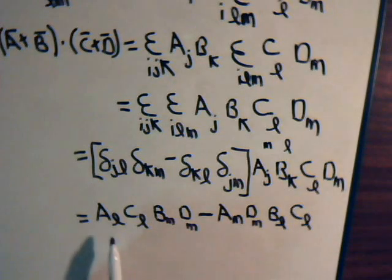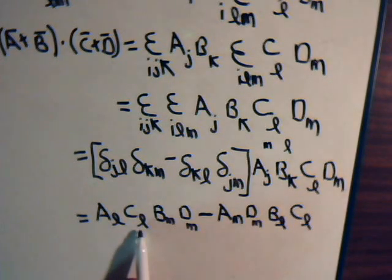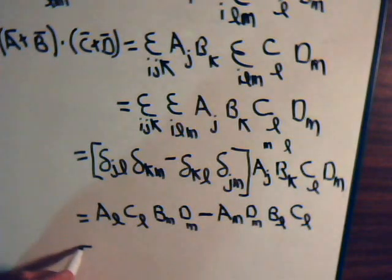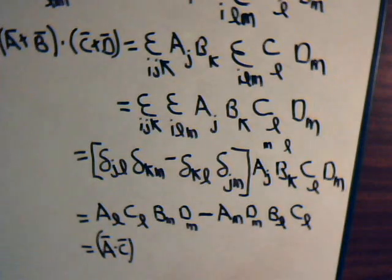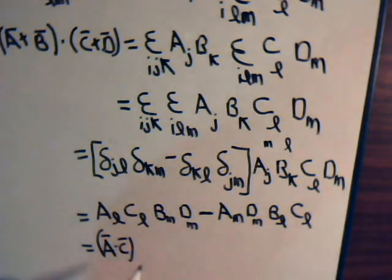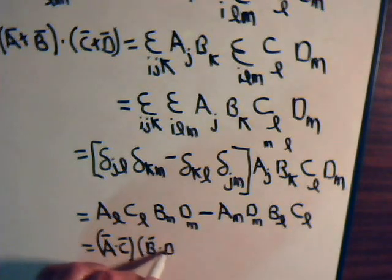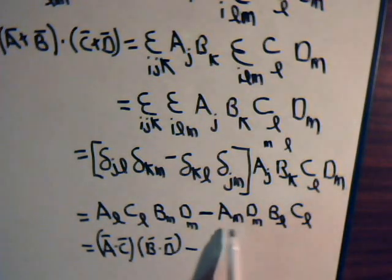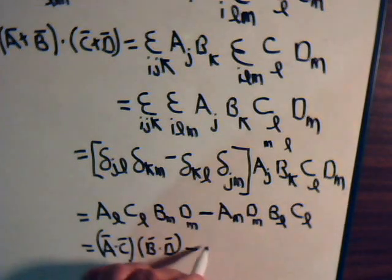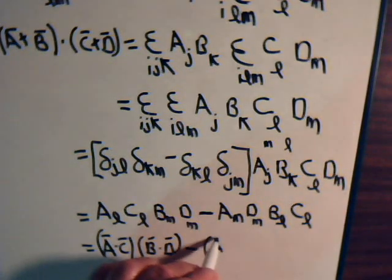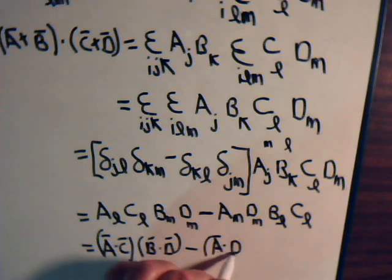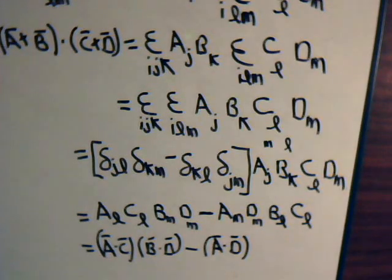Now this A_L C_L, that's component form for A dot C. This is component form for B dot D. This is component form for A dot D, and that is component form for B dot C.